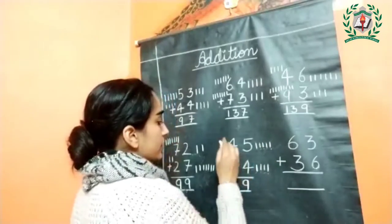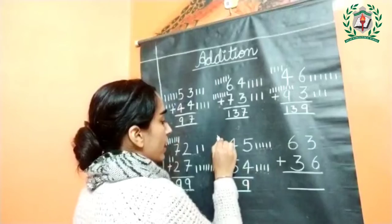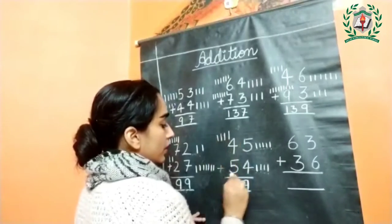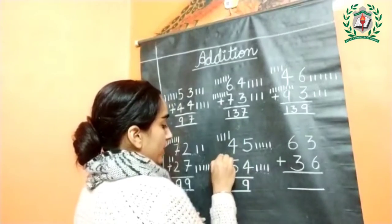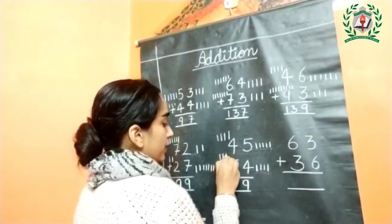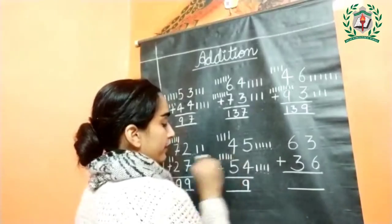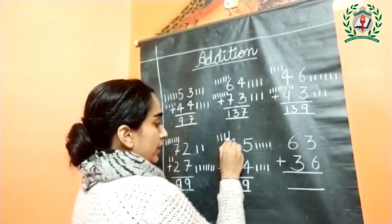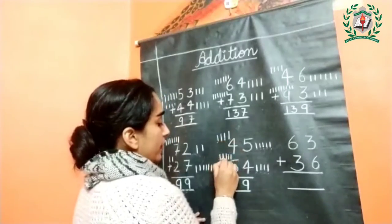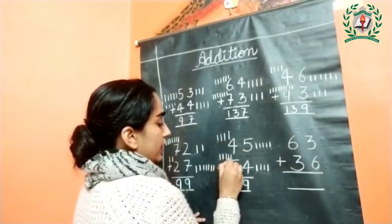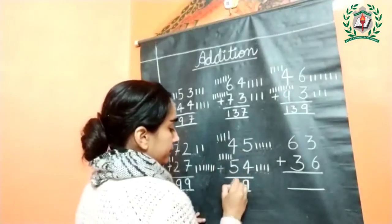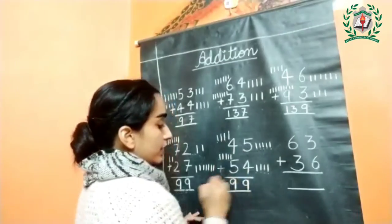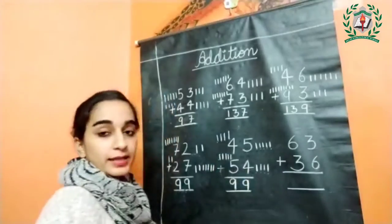Next, four: one, two, three, and four. Five: one, two, three, four, and five. Count together: one, two, three, four, five, six, seven, eight, and nine. Total number is ninety-nine.